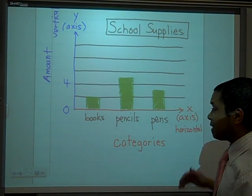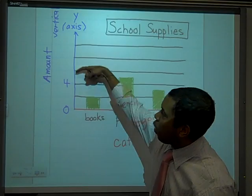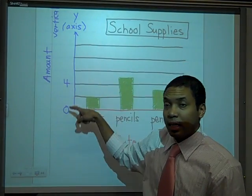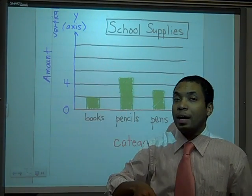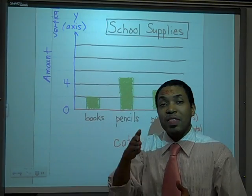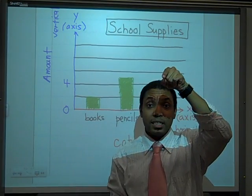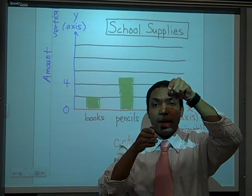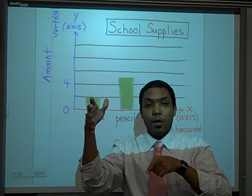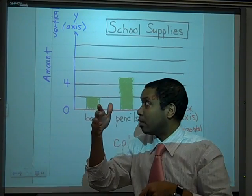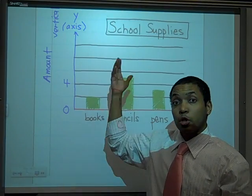Now on my x-axis, as I said, I have my categories. On my y-axis, which goes vertically up and down, I'm going to have my y-axis and that's going to tell me the amounts. So on my y-axis on a bar graph, I'm going to get the amounts of whatever items I'm talking about. In this case, it's school supplies.